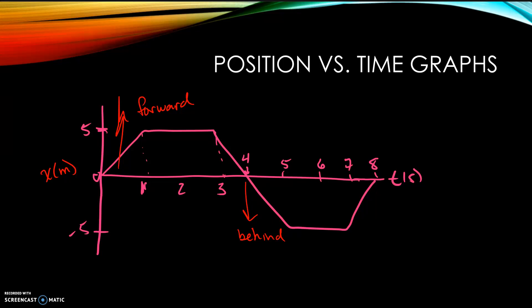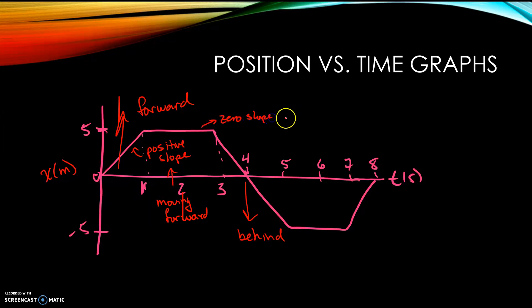The other thing to look at is the slope. The slope gives us the speed of the object and also tells you whether the object is moving forwards or backwards. A positive slope means the object has a positive speed and is moving forward. A zero slope means the object has stopped moving. A negative slope means it's moving backwards.